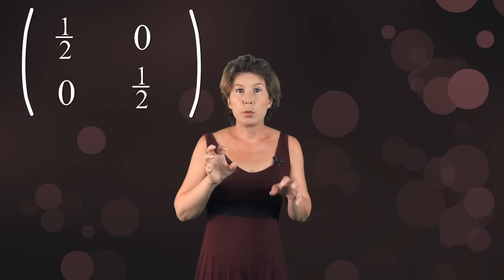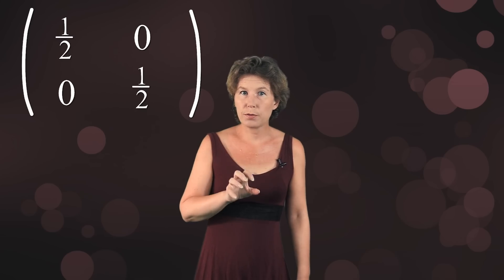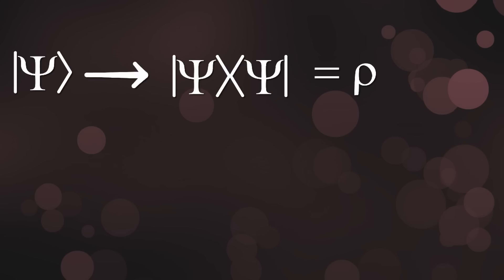So, the matrix that we got after decoherence no longer corresponds to a wavefunction. That's why we use density matrices in the first place. Every wavefunction gives you a density matrix. But not every density matrix gives you a wavefunction. If you want to describe how a system loses coherence, you therefore need to use density matrices.